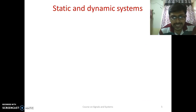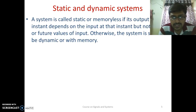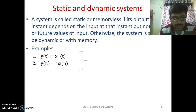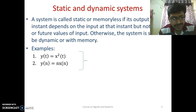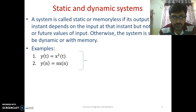Next is the static and dynamic system. A system is called static or memoryless if its output at any instant depends on the input at that instant but not on past or future values of input. Otherwise, the system is said to be dynamic or with memory. For example, y(t) = x²(t) — for any value of t, y(t) depends on the present value of input. Similarly, y(n) = n·x(n) — here y(n) also depends only on the present value of x(n). So these systems are called static or memoryless systems.